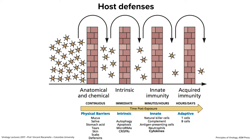Then we have intrinsic defenses. If things get over the anatomical barriers — and a lot don't, we're protected from a lot of infections by those — we have intrinsic defenses which are always present and immediately available. They include autophagy, apoptosis, microRNAs, and CRISPRs. Then we have innate immunity, which takes minutes to hours to induce. This includes natural killer cells, complement, antigen-presenting cells, neutrophils, and cytokines.